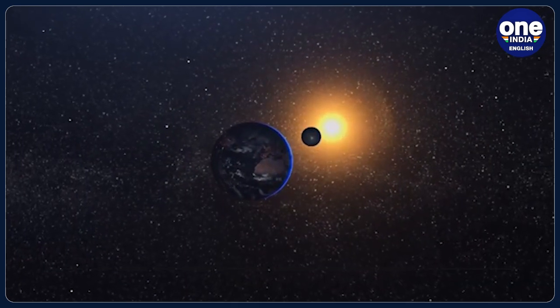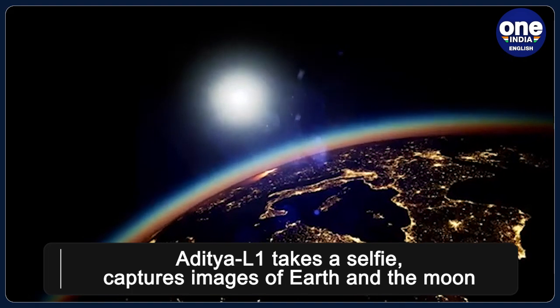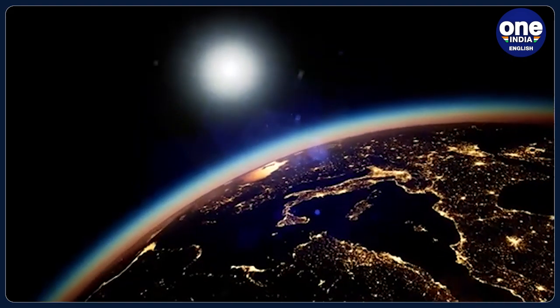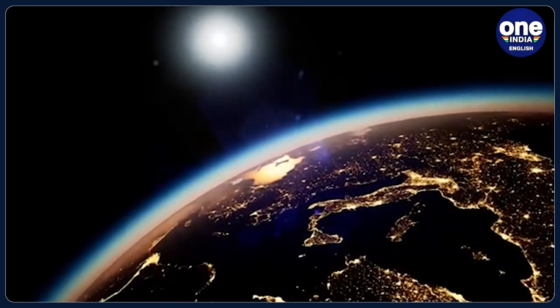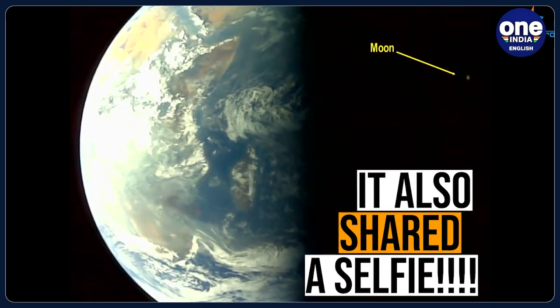India's Aditya L1 spacecraft has captured stunning images of Earth and the Moon from space as it loops around the planet ahead of leaving for its destination Lagrange point 1. It also shared a selfie.